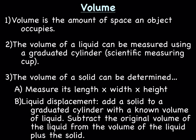You can also measure the volume of a solid by liquid displacement. You take a solid and add it to a graduated cylinder that already has a known volume of liquid. When you add that solid, the height of the liquid will rise. Then you subtract the original volume of the liquid alone from the volume of the liquid with the solid in it, and that will give you the volume of the solid.